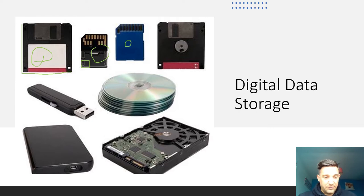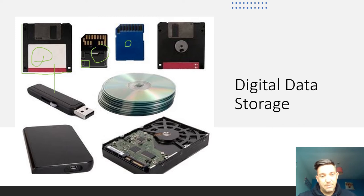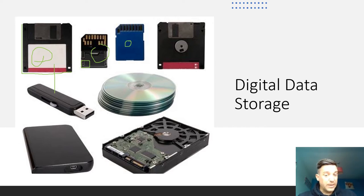Next we have a flash drive — you're all familiar with these. The size of these can vary enormously; I've seen one up to one terabyte, which is a thousand gigabytes — a massive difference from a floppy disk. Next we've got a CD-ROM, which is basically a read-only CD, and these can hold around 70 minutes of music, so we're getting towards four gigabytes for those.